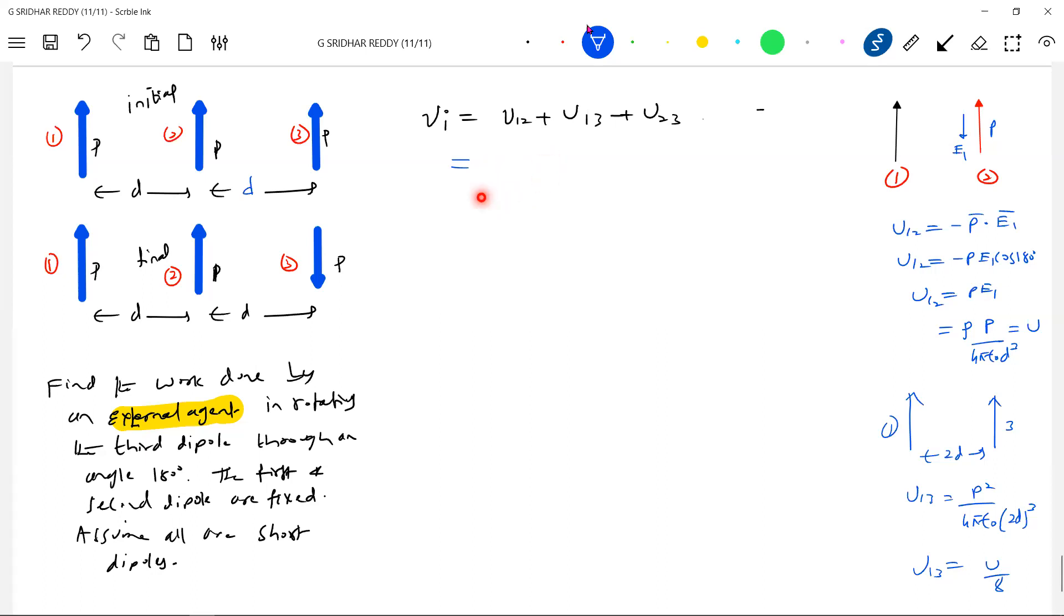I'll take it out all in the end. I'll substitute this one, this is U, this will be U by 8. Now what about U₂₃? Should be U. So initially how much it is? 17/8 U by 8. Able to make it out?